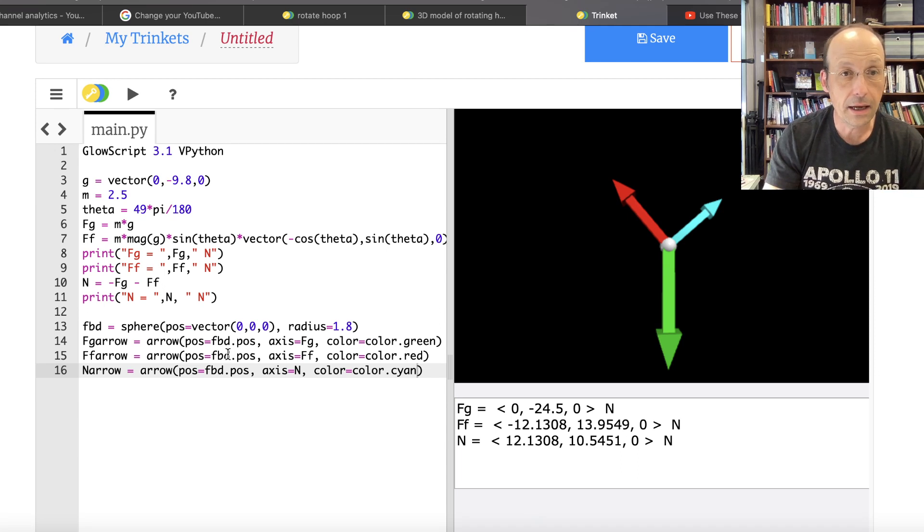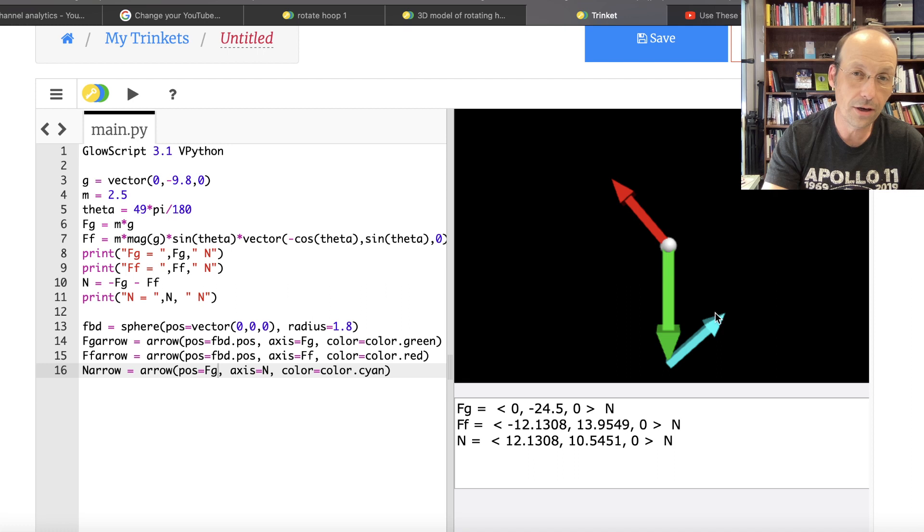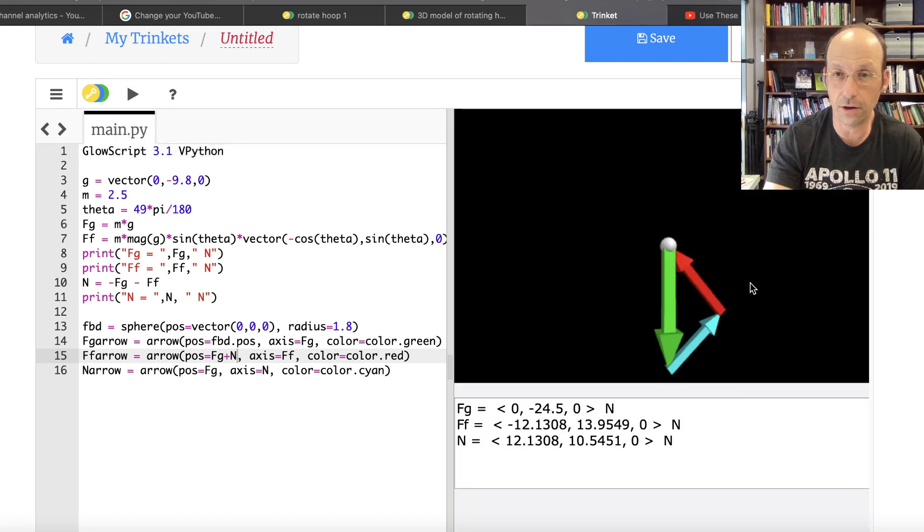So that means that my FF arrow is not going to be at the free body diagram. It's going to be actually, this position is going to be the end of the green arrow, which is FG. So see now I put the position down here, which is the end of that place. Now I'm just going to put, I need to put this one down here, which is actually FG plus N. So FF, this one's going to be right here, FG plus N. There. And so you see that all those vectors add up to zero.